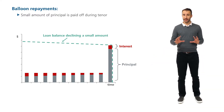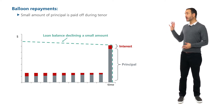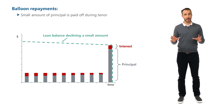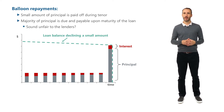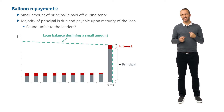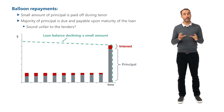An alternative repayment method to the bullet is the balloon repayment, where instead of just paying the interest, we also pay some principal before the maturity date of the loan. This slightly improves the position of the lenders over the bullet repayment structure, but it still sounds pretty unfair for lenders and has a similar issue to bullet repayments.